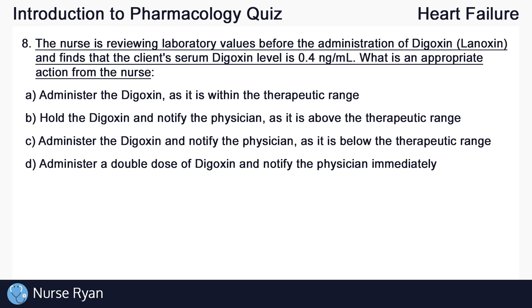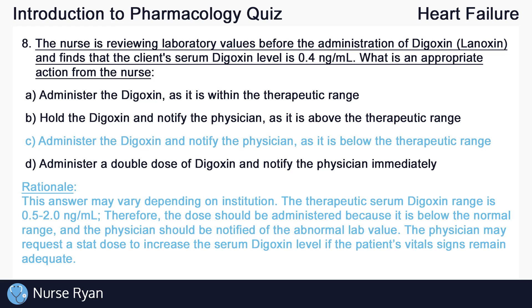And our last question, number eight: the nurse is reviewing lab values before the administration of digoxin and finds that the client's serum digoxin level is 0.4 nanograms per milliliter. What is the most appropriate action from the nurse? The right answer here is C: administer the digoxin and notify the physician, as it is below the therapeutic range. Note that this answer may vary depending on institution. The therapeutic serum digoxin range is 0.5 to 2 nanograms per milliliter. Therefore, the dose should be administered because it is below the normal range and the physician should be notified of the abnormal lab value. The physician may request a stat dose to increase the serum digoxin level if the patient's vital signs remain adequate.